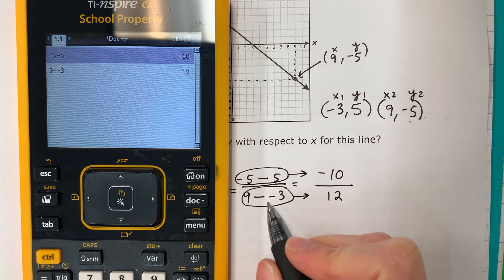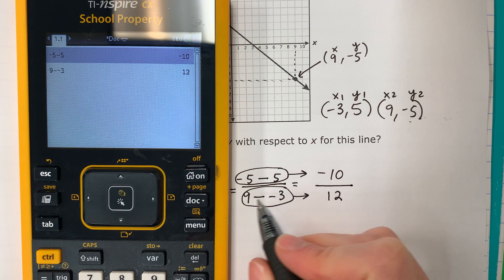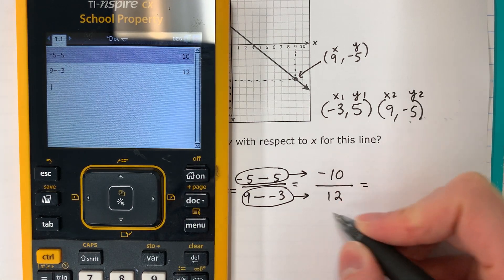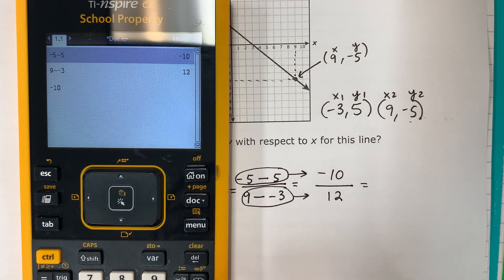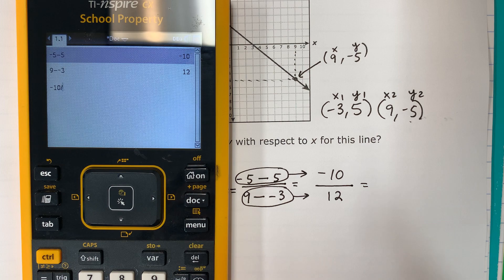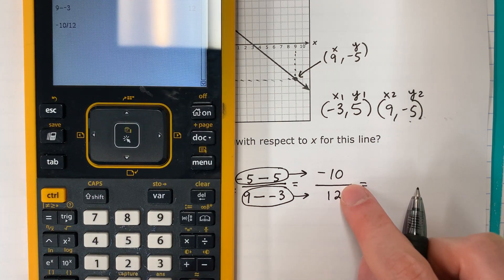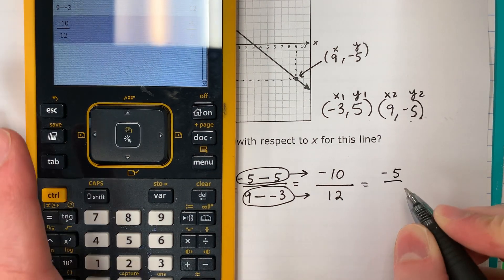So remember, minus minus is plus. So this is like 9 plus 3, equals 12. Okay, now we're going to put all of it in the calculator. So negative 10 divided by 12. So remember that this is division. And you get negative 5 sixths.